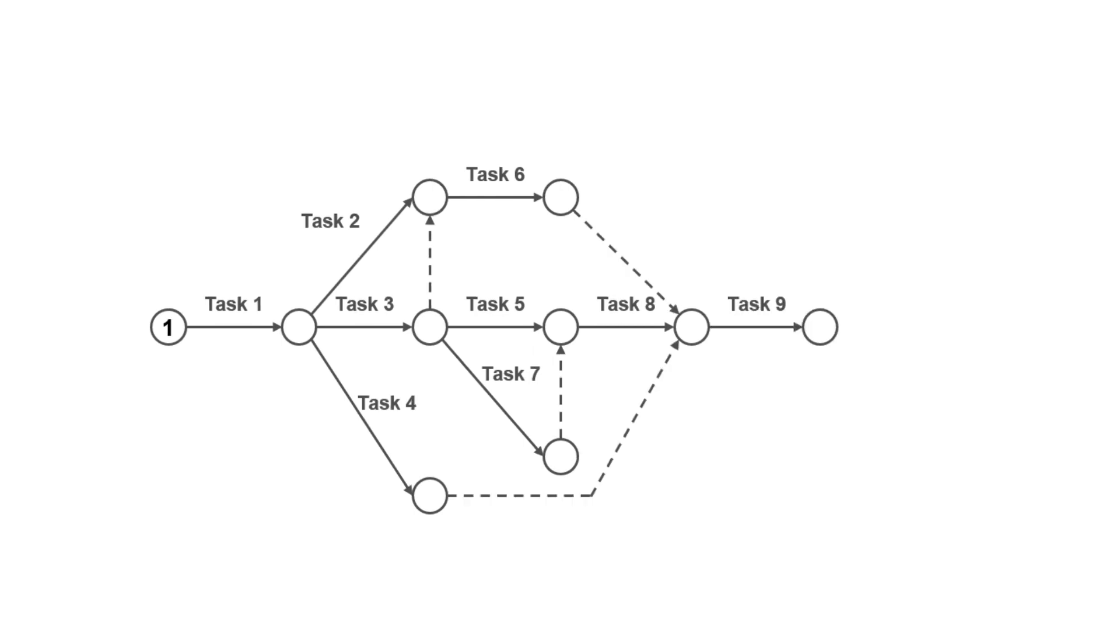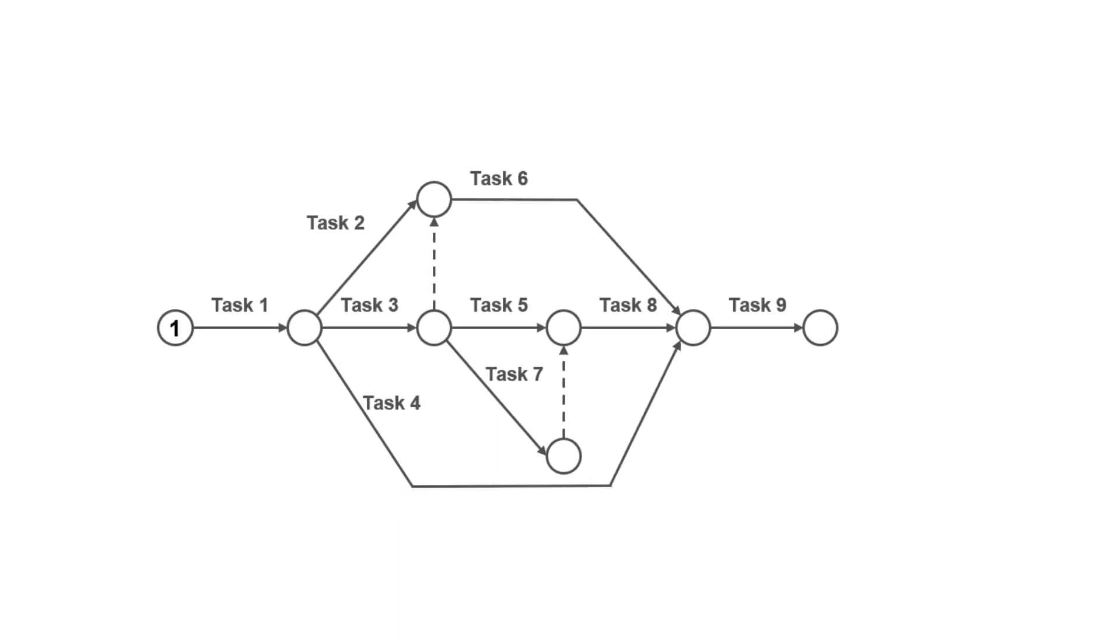Moving on to task 9, it requires tasks 4, 6, and 8 completed. So we can draw task 9 with predecessor tasks connected to the node that task 8 ends. But if you remember what we discussed in the previous lesson, we must at all times try to reduce introducing dummy activities and dummy nodes. Here we have two dummy nodes and activities, and we need to simplify it.